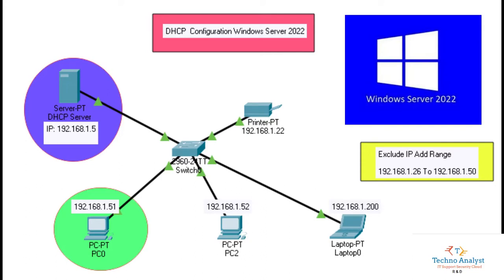Welcome to TechnoAnalyst. Today we will configure a DHCP server in Server 2022. In my last video we already configured DNS and Active Directory Domain Services, and after that we added one Windows 11 system into the domain. So now we will configure a DHCP server and check whether after configuring it, a client system takes an IP from the DHCP server or not. So we will start.